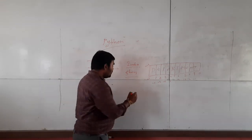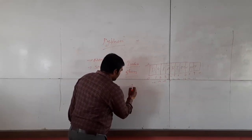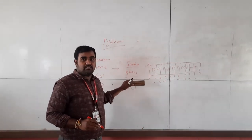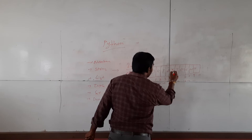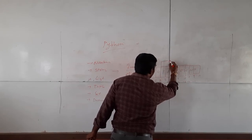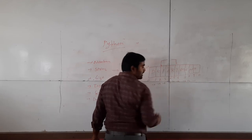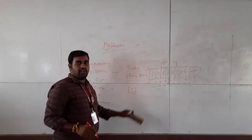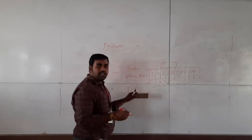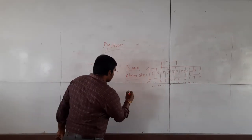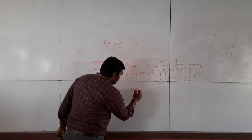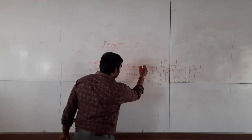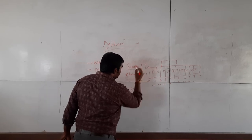And slicing — by using the colon symbol, we are going to extract a substring from the given string. Suppose if I want to extract only 'PART' from the string 'department'. I am taking this string in a variable str.